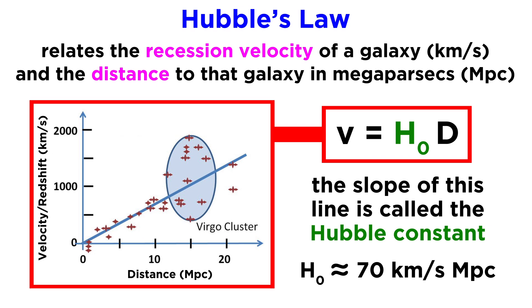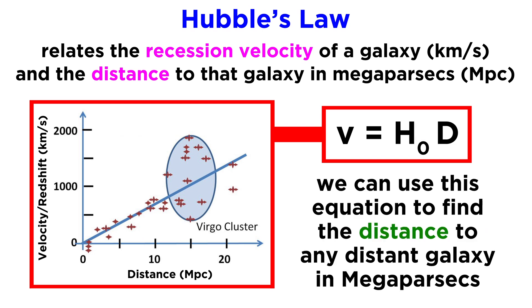We can use this equation to find the approximate distance to any distant galaxy in megaparsecs, given its recession velocity that we can determine from the red shift in its emission spectrum.